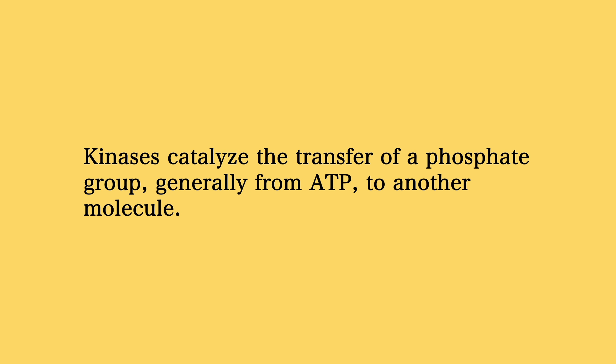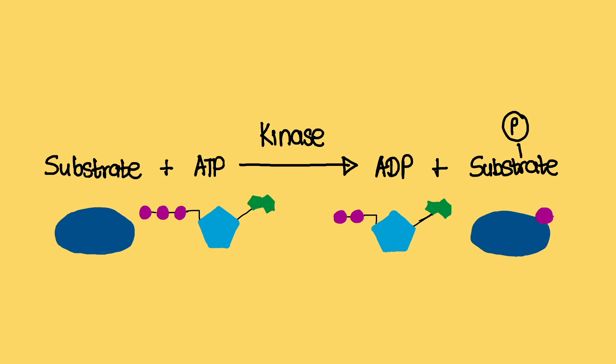The best example of one of these exceptions is kinase. Kinases are transferases as well. They catalyze the transfer of a phosphate group, generally from an ATP to another molecule. So a kinase would remove a phosphate group from ATP, converting the ATP to ADP, and transfer the removed phosphate group to a substrate, creating a phosphorylated version of the substrate.